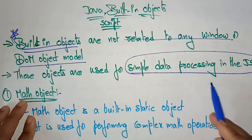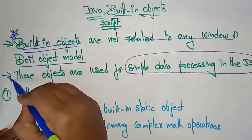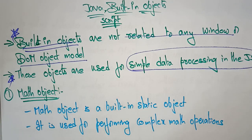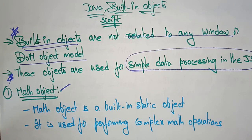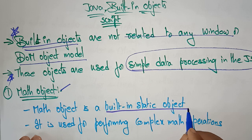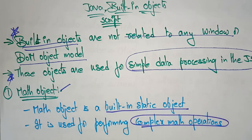Now let's see the first built-in object in JavaScript — that is the Math object. Whenever you see the word 'Math', we are going to do some mathematical equations. For some mathematical formulas, the code is already built-in in JavaScript. The Math object is a built-in static object used for performing complex mathematical operations. For simple addition, subtraction, and multiplication, you don't need to call anything — it will happen automatically. But for complex math operations, you need to call the appropriate method.